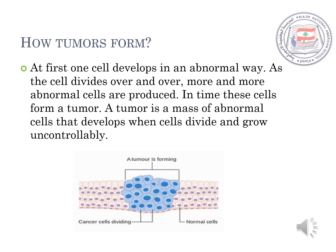At first, one cell develops in an abnormal way. As the cell divides over and over, more and more abnormal cells are produced. In time, these cells form a tumor. A tumor is a mass of abnormal cells that develops when a cell divides and grows uncontrollably. You can see the tumor here in blue — these cancer cells start dividing uncontrollably and form a tumor.